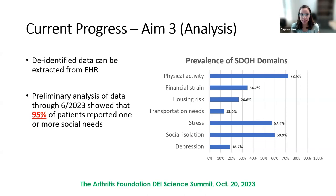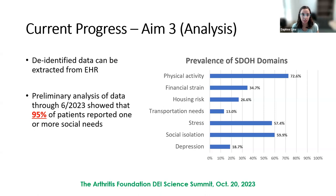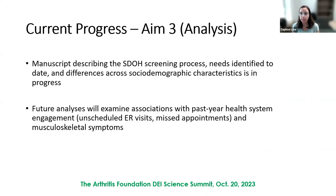For AIM-3, we are doing analyses to look at how SDOH relates to patient health outcomes. Our preliminary analysis of data through the end of June found that 95% of patients reported one or more social need, the highest being inadequate physical activity, followed by high degrees of stress and social isolation. About a quarter of patients are at risk for housing needs, and 13% have transportation needs. Future analyses will examine relationships with past year health system engagement and musculoskeletal symptoms.